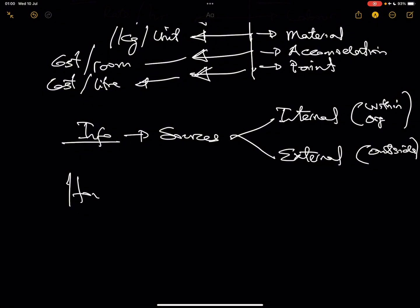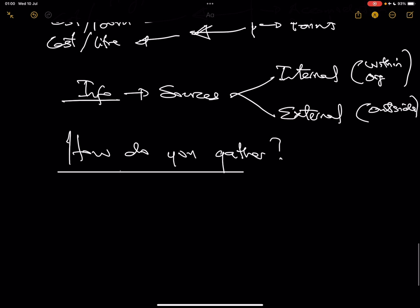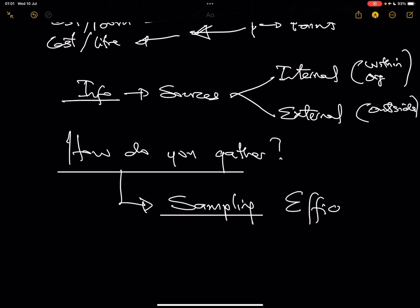Once you know the sources of information, the next question is: how do you gather it? The best way to gather information from these sources is through sampling. We use sampling because you don't need to gather all available information — the answer is simply efficiency.